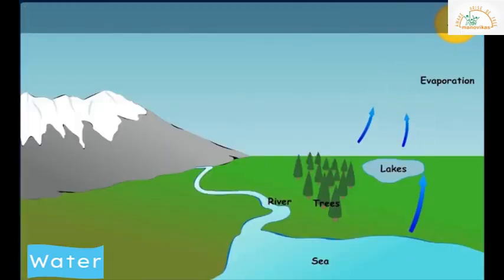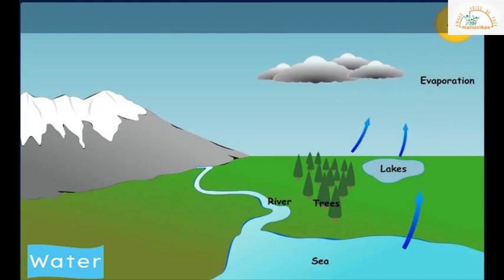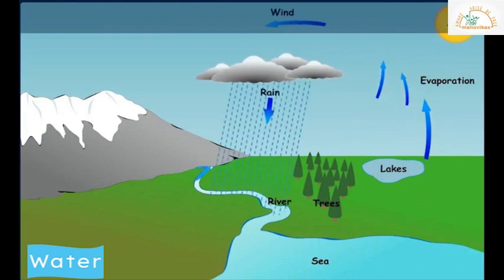So water evaporates to form clouds. These clouds condense as rain and fall back to the earth.